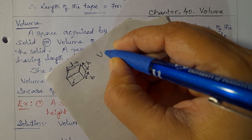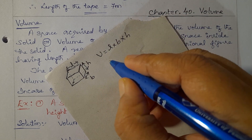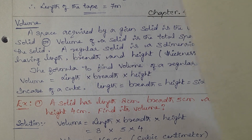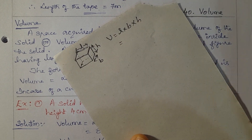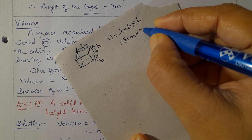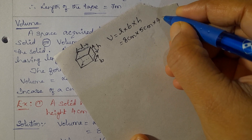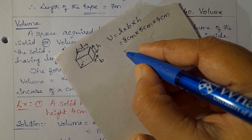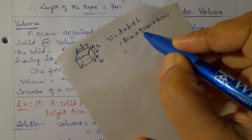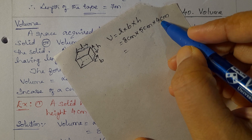Volume of solid = Length × Breadth × Height. Length is 8 cm, breadth is 5 cm, height is 4 cm. So, equal to 8 × 5 = 40. Then 40 × 4 = 160.